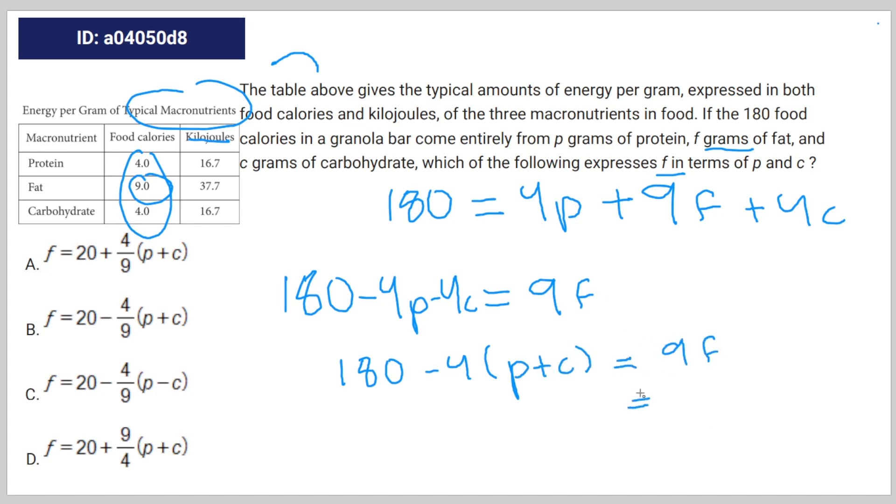And if you divide the entire thing by 9 to get it in terms of f, you get 20 minus 4 over 9 times (p plus c).